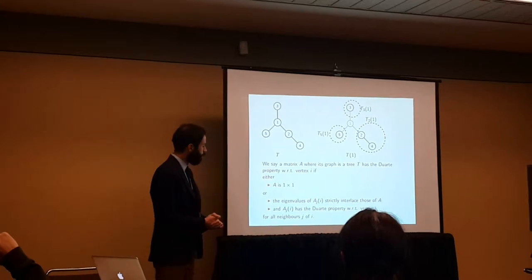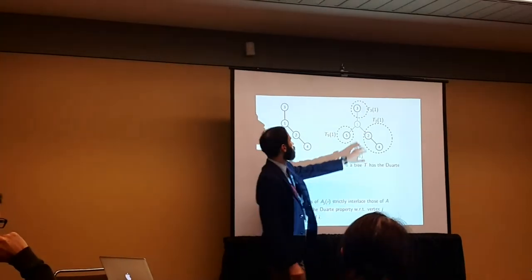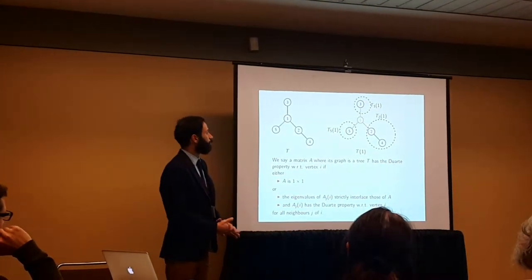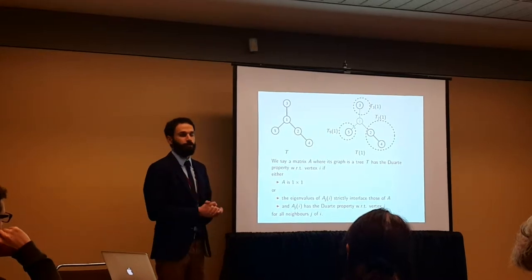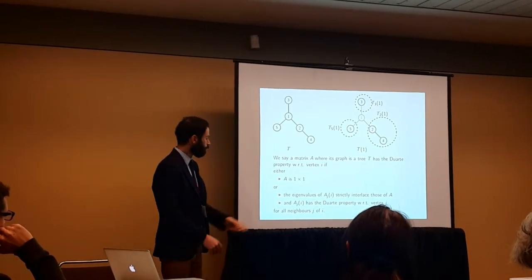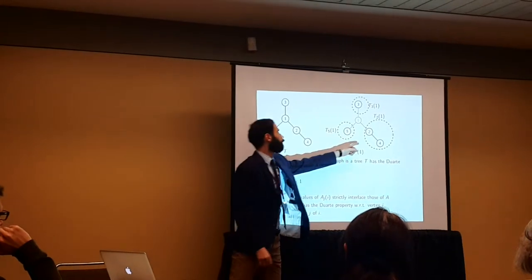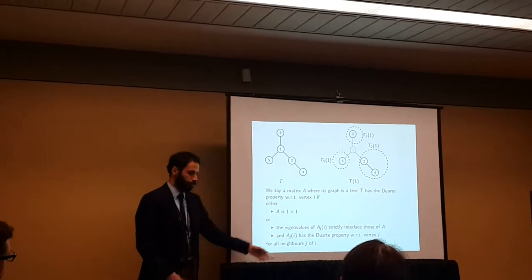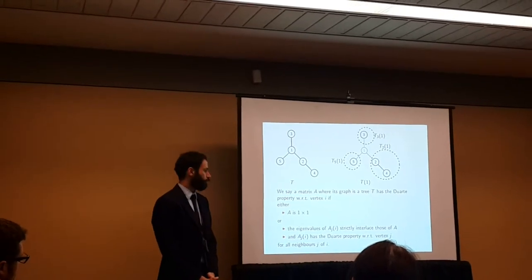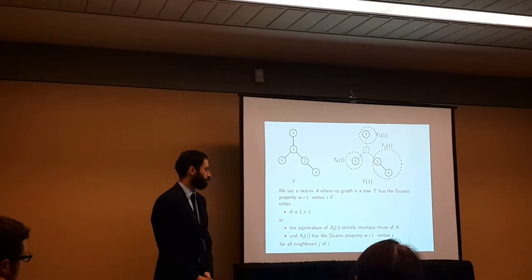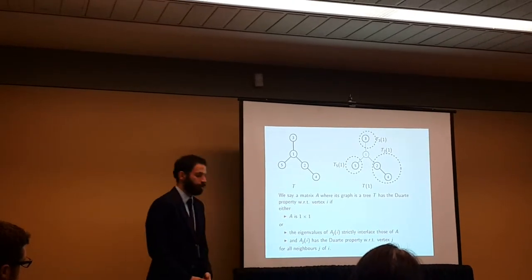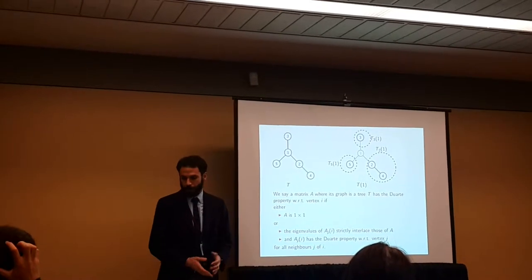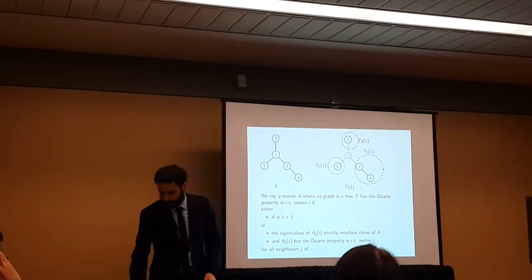Either A is 1 by 1, as an obvious case, or the eigenvalues of the matrix when I delete that vertex, everything else in the dotted circles, the eigenvalues here strictly interlace the eigenvalues of the big matrix. No coincidences happen here. Every small sub-matrix that I get here have the same property. That means I'm defining inductively. A_{j}^{i}'s also have the Duarte property with respect to the vertex j. This gives us a notion of genericness.